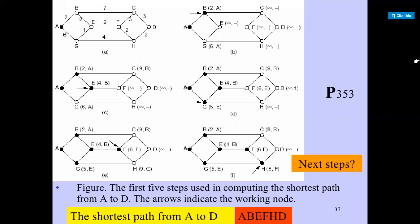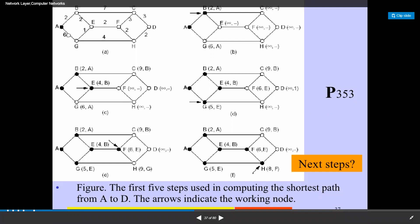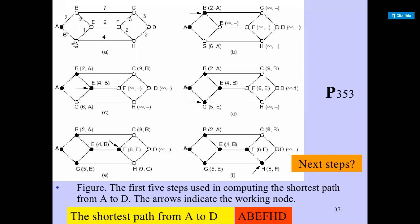In the first step, we have given the weights — from A to B the distance is given, B to C, from each router the distances are given for connected routers. We need to start from A. We need to find out the best known path. Initially, no paths are known. So all nodes are labeled with infinity. From A, A to B the distance is 2 and A to G the distance is 6. The shortest distance is A to B, which is 2.